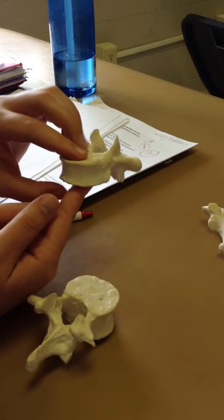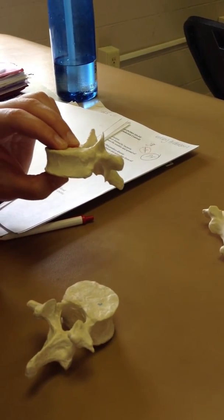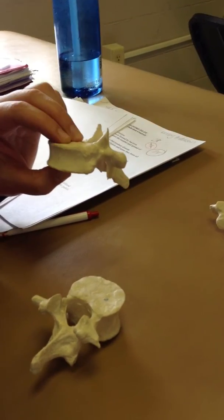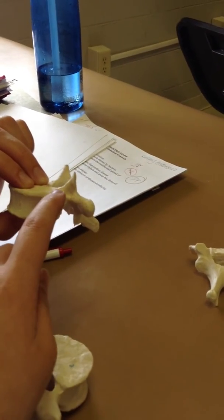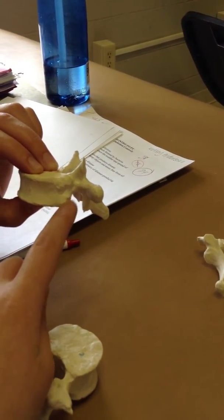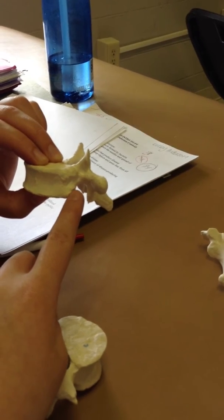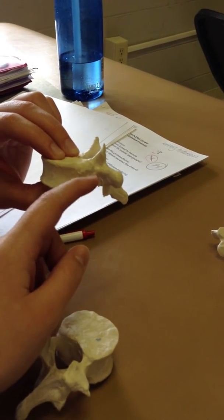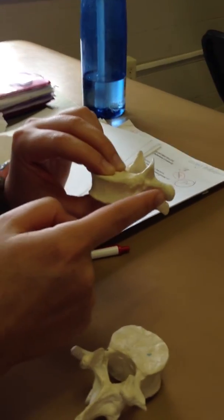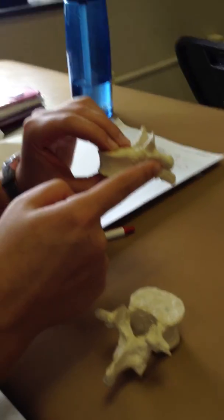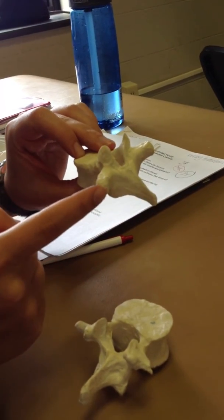And then the superior costal facet is where? Superior costal facet is going to be right there, and then that's the inferior right below it, where it's kind of flat underneath, so superior costal facet, inferior costal facet. And then transverse costal facet, and also transverse process.